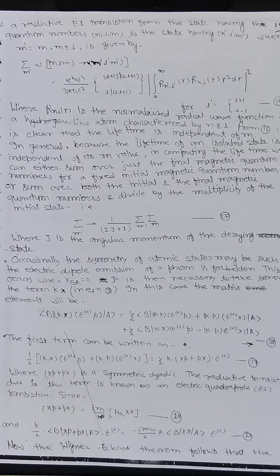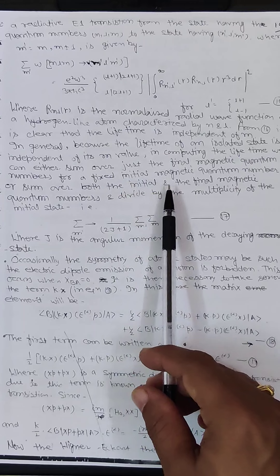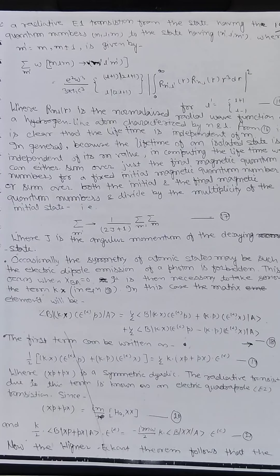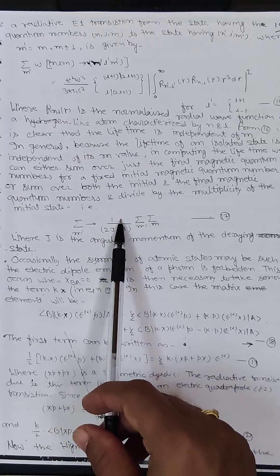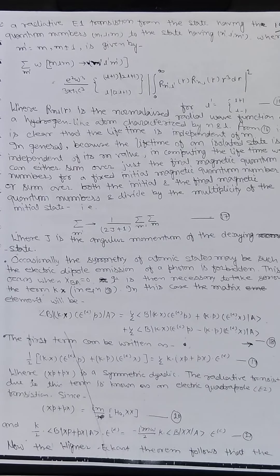It is clear that the lifetime is independent of m, because the lifetime of an isolated state is independent of its m values. In computing the lifetime, we can either sum over just the final magnetic quantum numbers for a fixed initial magnetic quantum number, or sum over both the initial and final magnetic quantum numbers and divide by the multiplicity of the initial state: (1/(2j+1)) Σ_m Σ_{m'}, where j is the angular momentum of the decaying state.